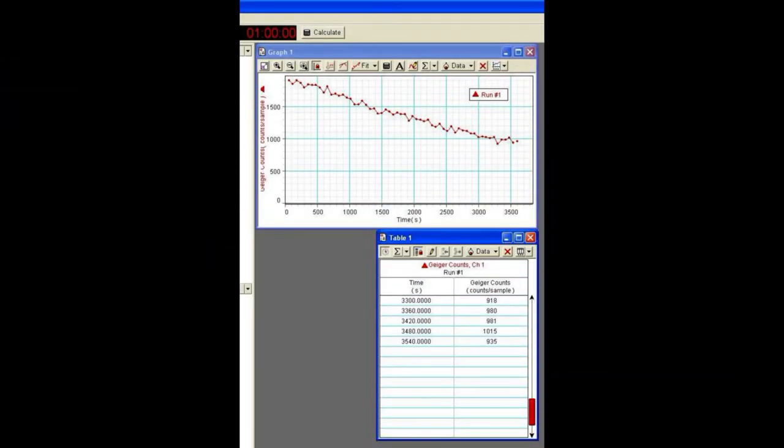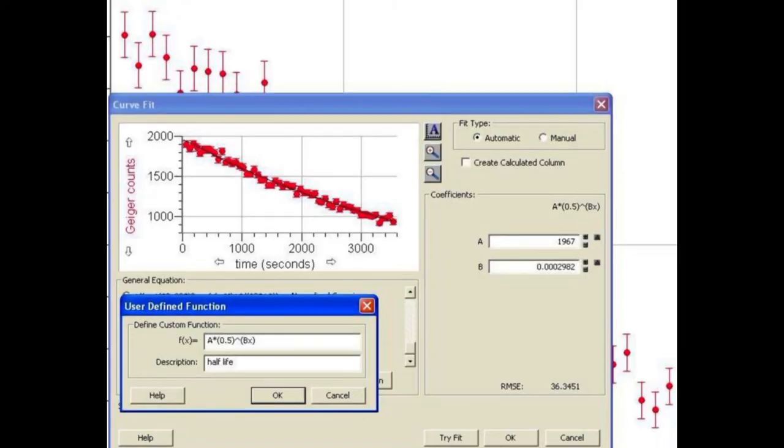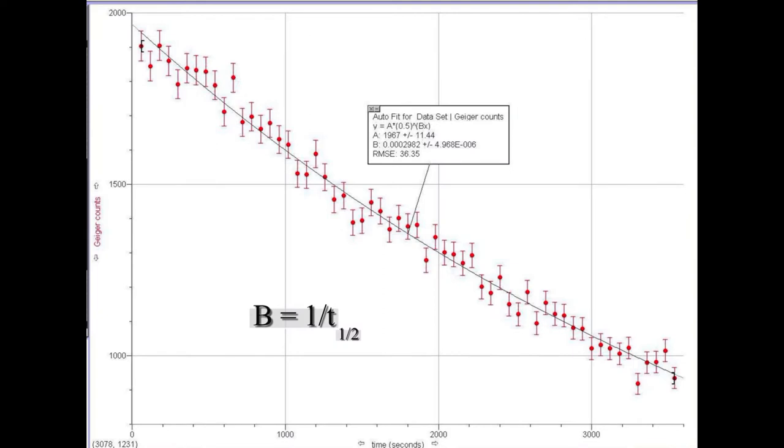After 1 hour, you will have a plot of activity, counts per minute, versus time. Transfer the data to graphical analysis and fit a function a times 0.5 raised to the b times x. The half-life is the inverse of b.